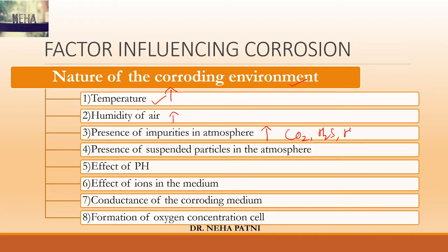Apart from gaseous impurities, there could be suspended particles in the atmosphere. In atmospheric corrosion, if suspended particles like sodium chloride or ammonium sulfate are present, they absorb moisture and act as strong electrolytes, enhancing corrosion. There should not be suspended particles present in the atmosphere. Coming to the effect of pH: acidic media are more corrosive than basic or neutral medium, so you have to ensure the pH is not too acidic.